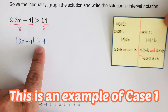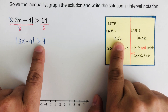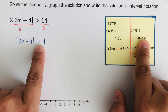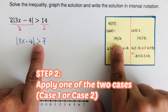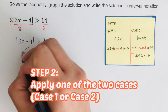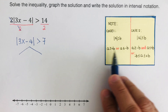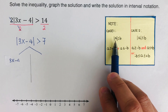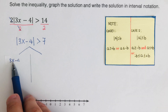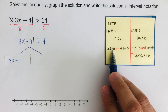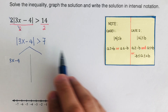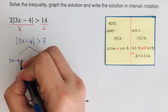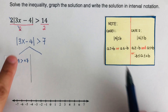Since this is a greater than case, this belongs to case one. Case one covers greater than or greater than or equal to; case two covers less than or less than or equal to. We split this into two parts: a equals three x minus four. The first part gives us three x minus four is greater than positive seven, since there is no bar underneath we keep all solutions without a bar.